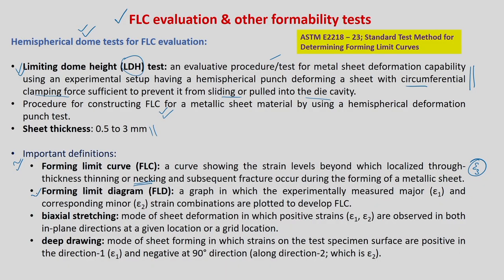The next important definition is the forming limit diagram, or FLD. It is a graph in which experimentally measured major strain (epsilon 1) and minor strain (epsilon 2) combinations are plotted to develop the FLC. You want to get epsilon 1 star and epsilon 2 star practically, and while doing so you calculate strains and plot them together. The entire diagram with all these plotted values is called the forming limit diagram.